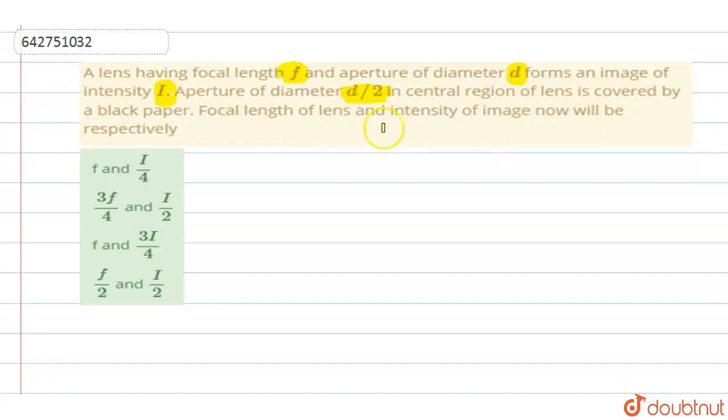Focal length of lens and intensity of image now will be. So what they are doing here is, they have a lens of focal length f and in that they have made a small aperture of diameter d.